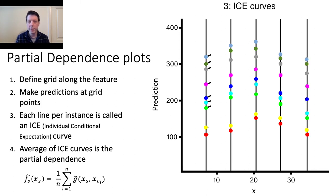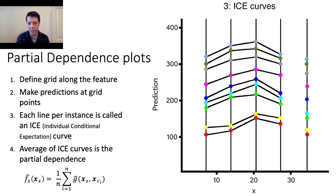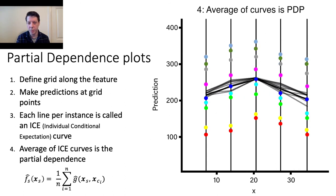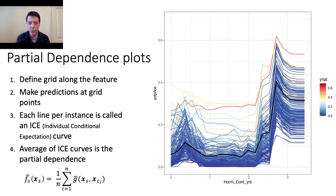Each line per instance is called an individual conditional expectation, or ICE curve. The average of these ICE curves is the partial dependence. Here we can see an example of the ICE curves for one of the variables, and the average PDP in black.